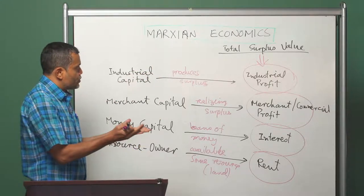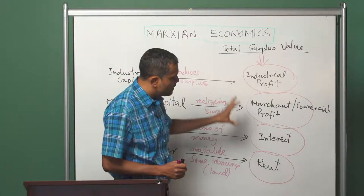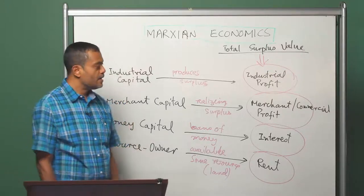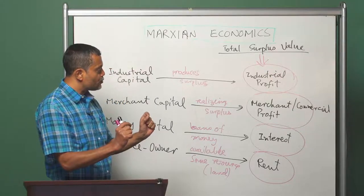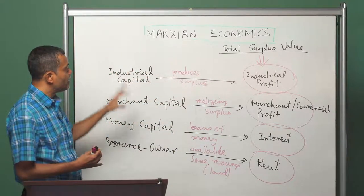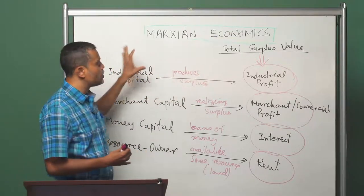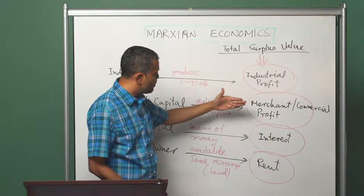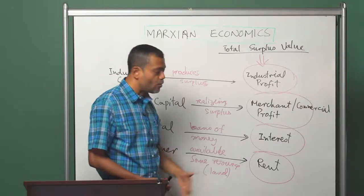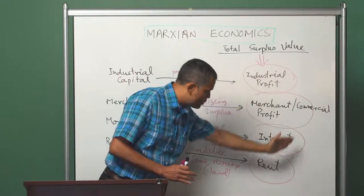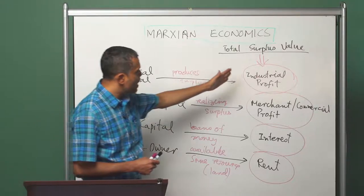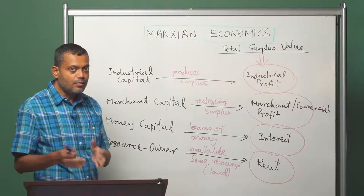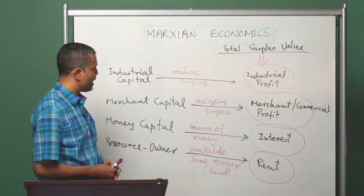The important point to take away from this analysis is that the ultimate source of income of every fragment of the ruling class — every fragment of the class which is not directly producing commodities — is the surplus value appropriated through the unpaid labor of workers. Surplus value might take different forms: it might take the form of industrial profit, commercial profit, interest, or rent. But no matter what form it takes, it is merely a form of surplus value, and the ultimate source of surplus value is the unpaid labor of workers. That is the main thing to take away from this discussion.